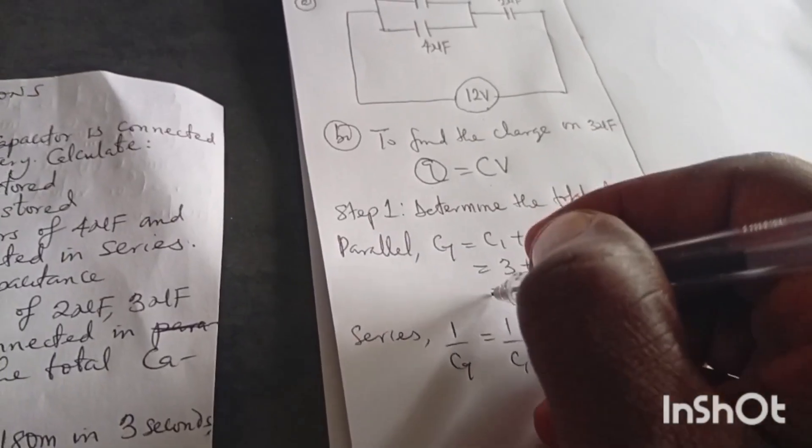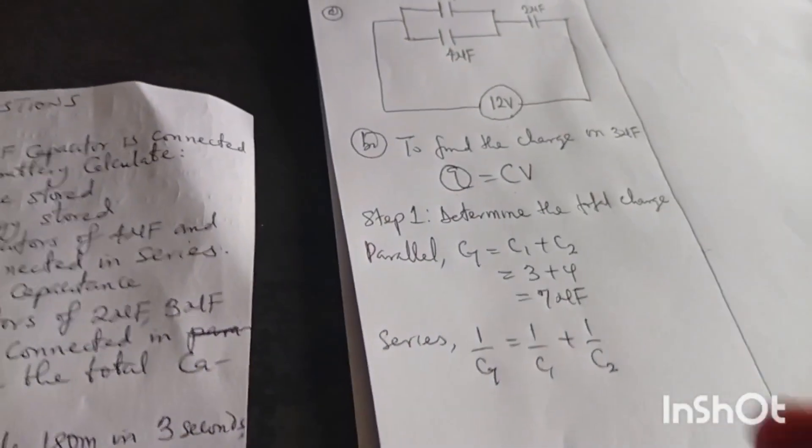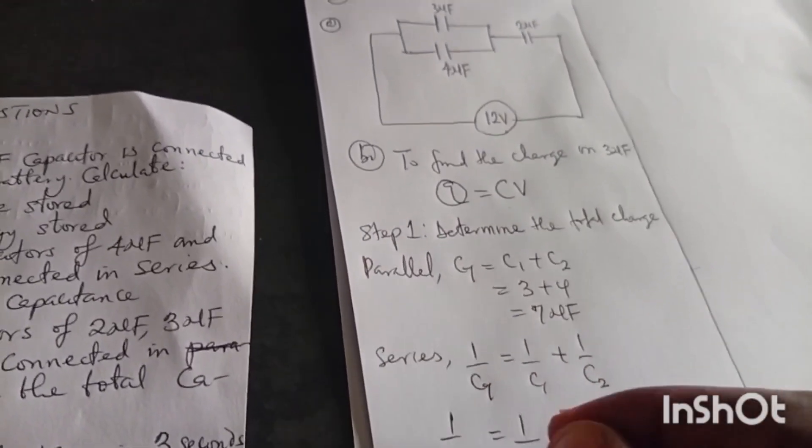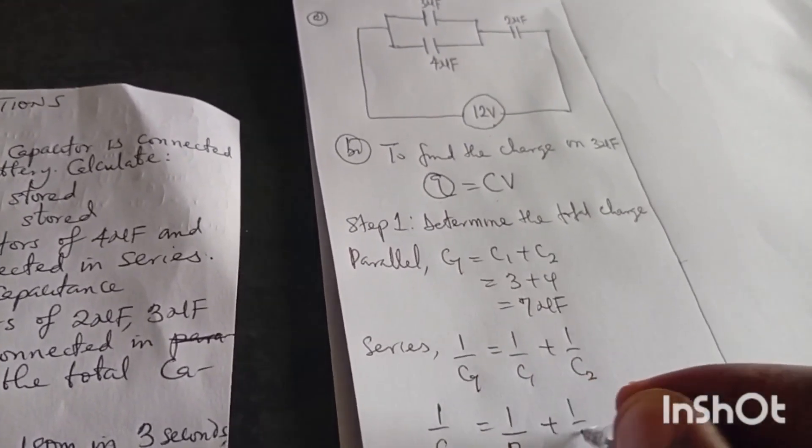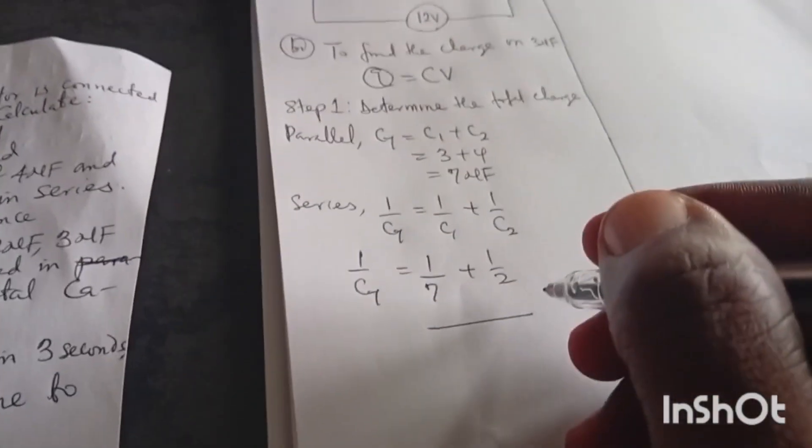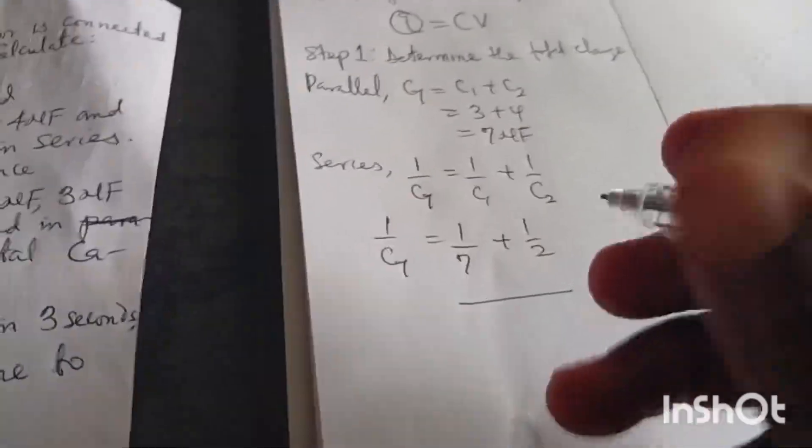That means 1 over C total equals to 1 over C1 plus 1 over C2. So this time around, this one has become our C1 and this is our C2. So we can say 1 over C total equals to 1 over 7 plus 1 over 2. When you find the LCM, please do well to find the LCM. Avoid calculator. Do the action properly.